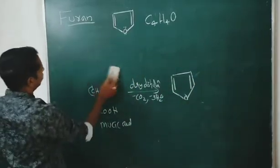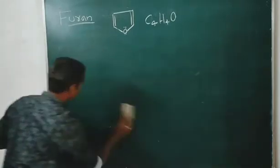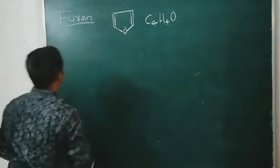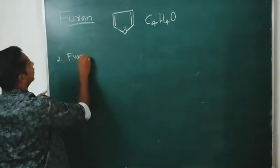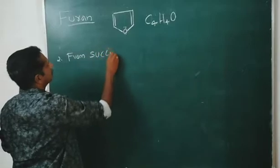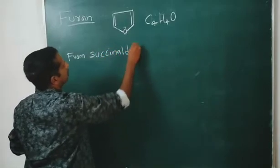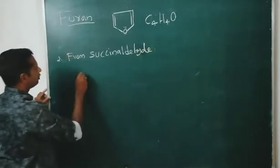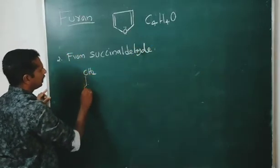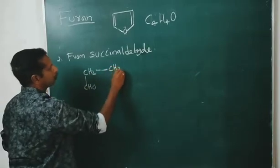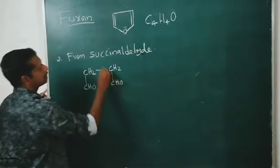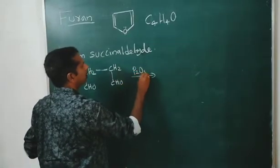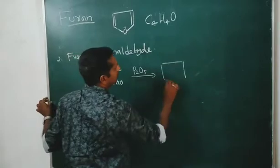Second method: from succinaldehyde. The structure is CH2CHO–CH2CHO. When heated with phosphorus pentoxide (P2O5), we get furan.